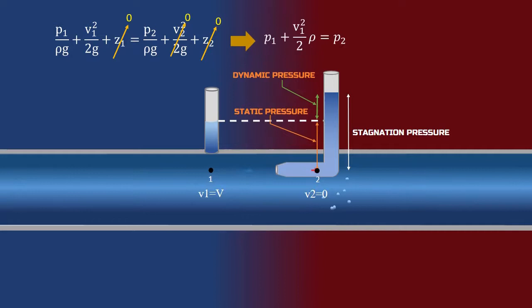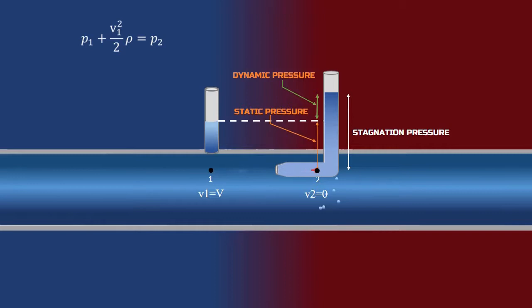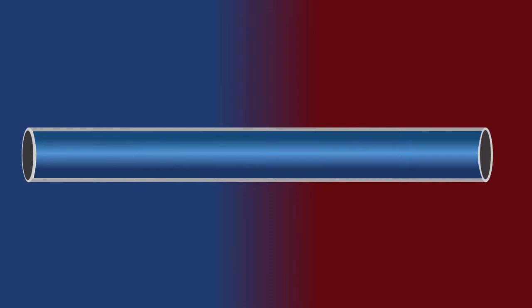Now if we rearrange the equation, we get the equation in this form: p2 is the stagnation pressure, where p1 is the static pressure, and v1 squared by 2 times rho is the dynamic pressure. From this equation, we can get the velocity of the fluid. Using a manometer, also we can calculate the velocity of the fluid.